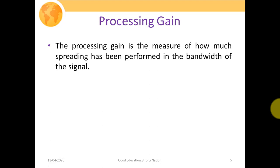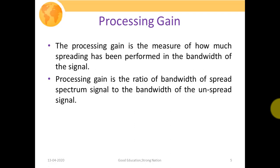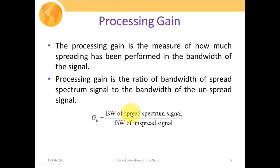The first one is processing gain. Processing gain is the measure of how much spreading has been performed in the bandwidth of the signal. In a spread spectrum communication system, we are spreading or expanding the bandwidth of our baseband signal. Processing gain is defined as the ratio of the signal bandwidth after spreading to the bandwidth of the signal without spreading.